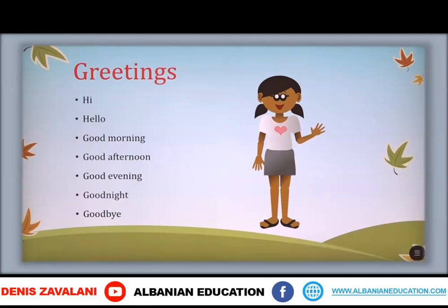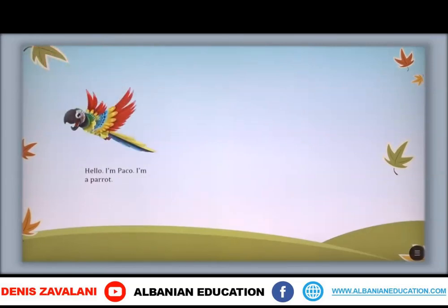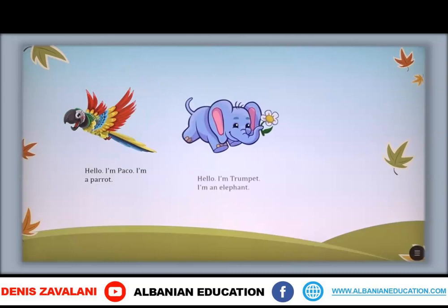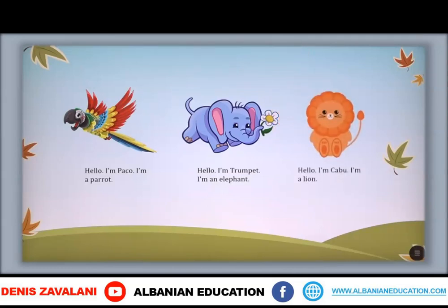Then, we learned how to introduce ourselves. Dhe pastaj, ne kemi mësuar se si të prezentohemi. Let's start. Hello, I'm Paco. I'm a parrot. Përshëndetje, unë jam Paco. Unë jam një papagall. Hello, I'm Trumpet. I'm an elephant. Përshëndetje, unë jam Trumpet. Unë jam një elefant. Hello, I'm Kabu. I'm a lion. Përshëndetje, unë jam Kabu. Unë jam një luan.